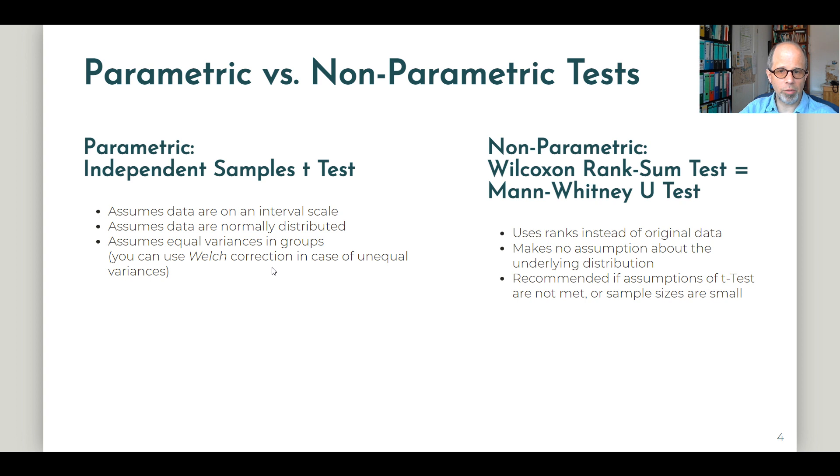On the other hand, the Wilcoxon rank-sum test, or Mann-Whitney-U test, is a non-parametric test. That means it doesn't use the original data on an interval scale, but it works with ranks. The data are just ranked or treated as ordinal data. Therefore, the test makes no assumption about the underlying distribution, and it is recommended if the assumptions of the t-test are not met or if sample sizes are quite small.